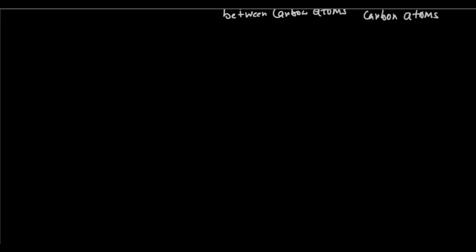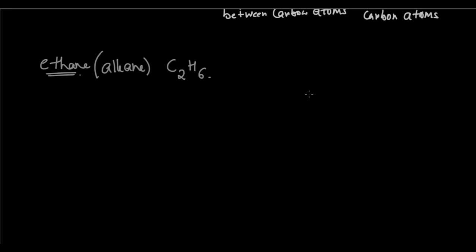So let's take an example and draw the Lewis dot structure this time. Let's take an example of ethane. Ethane is an alkane and it has the formula C2H6. Nomenclature of hydrocarbons we'll do later, so for now just look at it as an example. So C2H6, ethane - let's draw the Lewis dot structure.